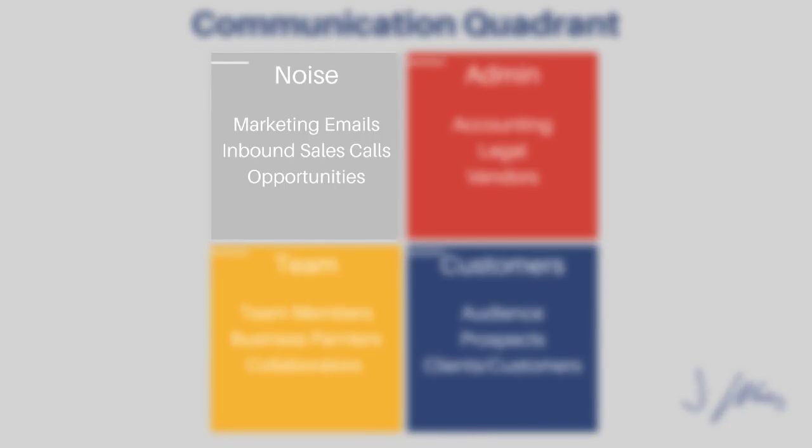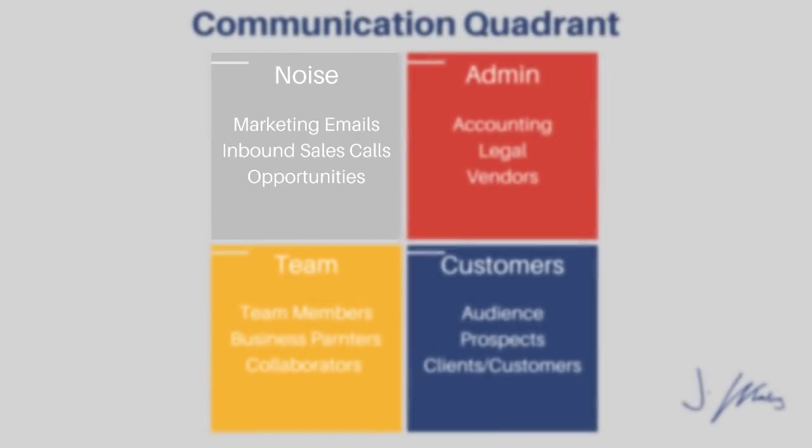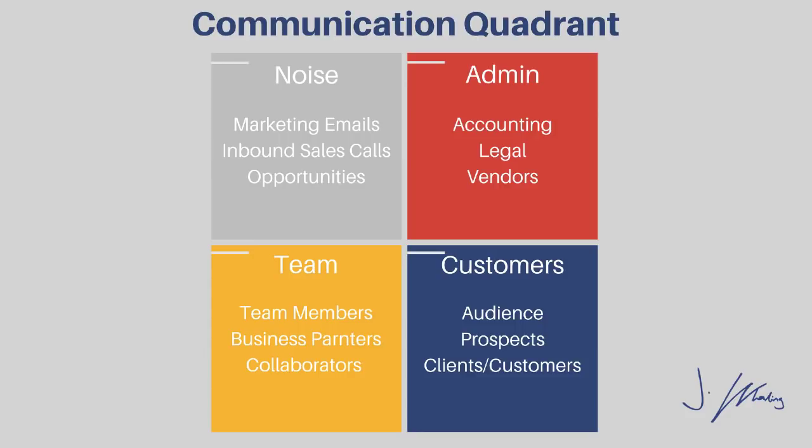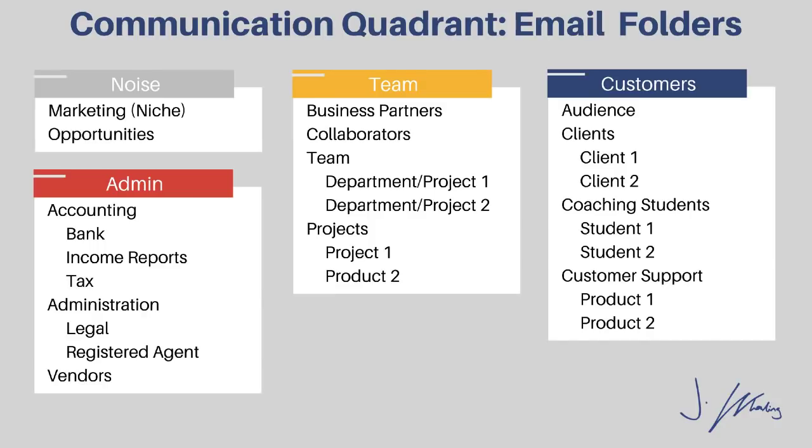We all receive the same amount of emails. The difference is how we filter and tag them using automated processes. With that, let's dive into my screen and walk through how to set all of these up, and the different subfolders I've come up with that you can just copy and paste into your Gmail account to really streamline your inbox process. This is what helps me filter through my entire inbox in literally five minutes in the morning.